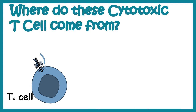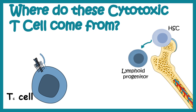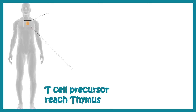Let's talk about where cytotoxic T cells come from. The development of T cells, just like other lymphocytes, starts in the bone marrow. There, a hematopoietic pluripotent stem cell gives rise to a common lymphoid progenitor, which produces T cell precursors. These precursors are released into the bloodstream and the next stage of T cell development starts in the thymus.